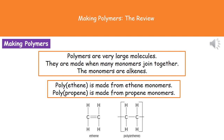Welcome to our review on making polymers. The first thing we need to understand is that when we're talking about a polymer, we're talking about a very large molecule. They're made when many monomers join together, and a monomer is a small molecule that actually makes up the polymer.